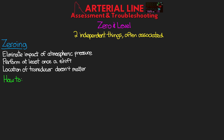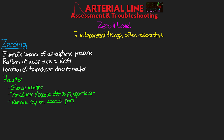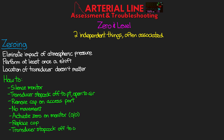To zero the transducer: first, hit silence on the monitor because you will get a red alarm. Turn the transducer stopcock off to the patient and open to air — this flattens the waveform. Remove the cap on the access port, ensure no movement or touching of the transducer, then activate zero through your monitor. Wait until you see zero over zero on the monitor, then replace the cap and turn the stopcock back off to the open port.